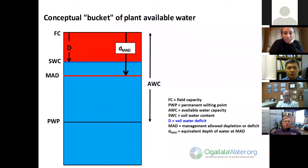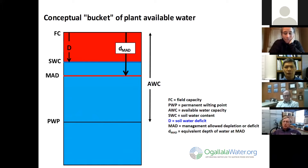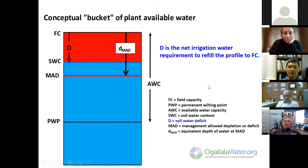What we do is track this deficit, this D value, which is represented by the red portion of the bucket. The deficit is the difference between the actual soil water content and the field capacity, and it is what we use for irrigation management — it indicates the net amount of irrigation water that has to be applied. If you track the deficit, you already know the net irrigation requirement to get back to field capacity.